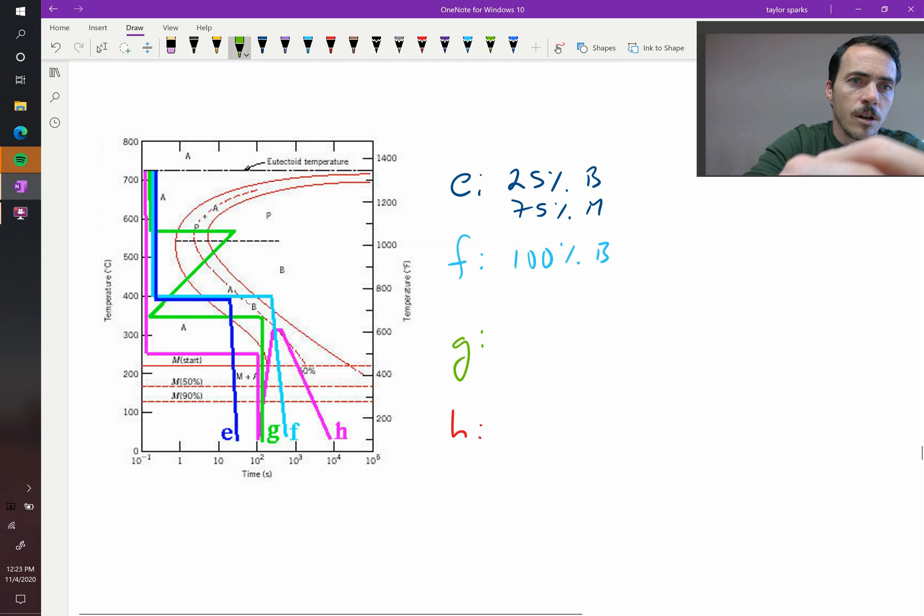For G, we're going to get 50% bainite, and then we're going to quench it, so we're going to get 50% martensite.